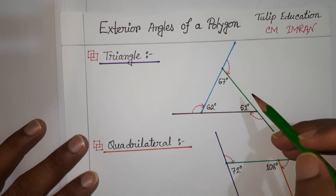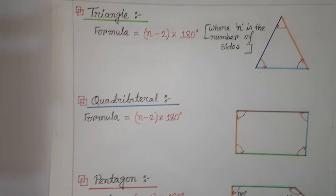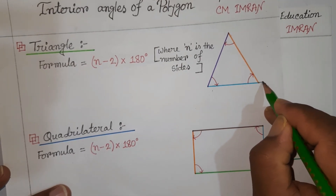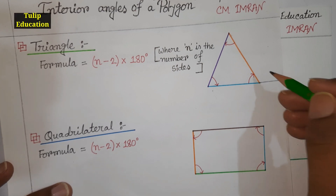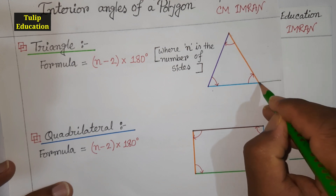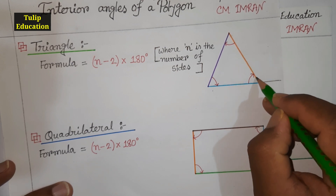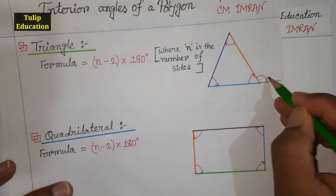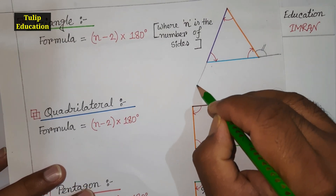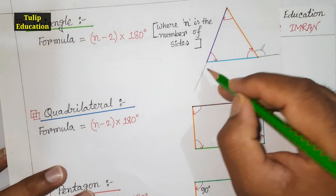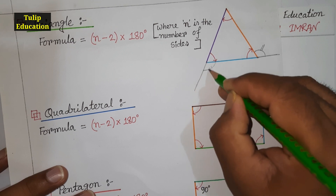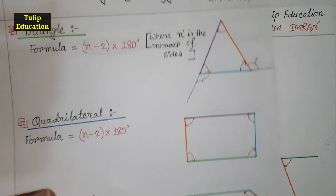As you can see in this triangle, if we extend this line we will get an exterior angle with the regular side. So between the extended line and the regular line we get an angle — that is our exterior angle. Similarly, if we extend another line, between that extended line and the regular side we get another exterior angle.